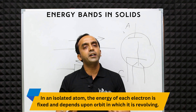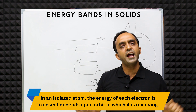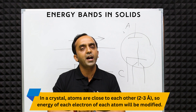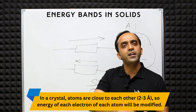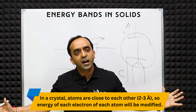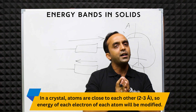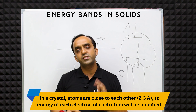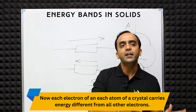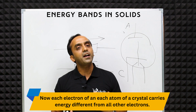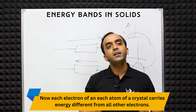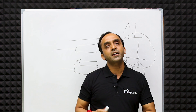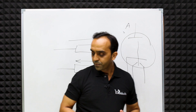Now, the most important topic: we are going to understand energy bands in solids. This is the main topic of our syllabus and it is very important. We assume we have N atoms. When atoms are far apart, the energy of each electron in its orbit is constant. But as we bring atoms closer together, each electron's energy gets modified — it becomes slightly different — and this forms the energy band.